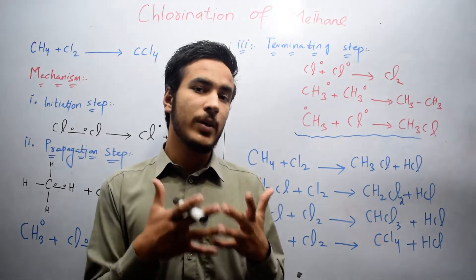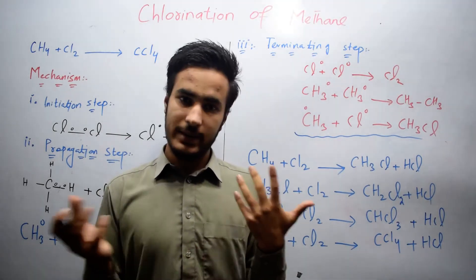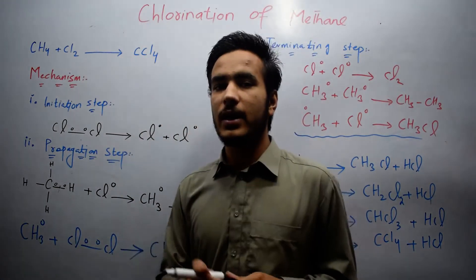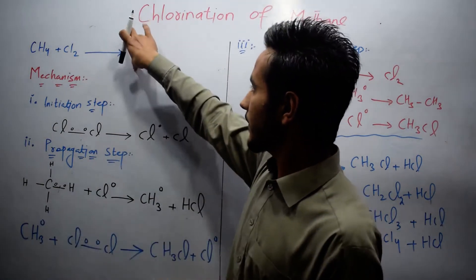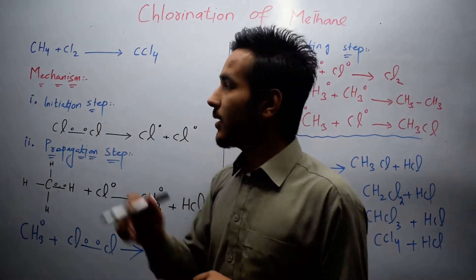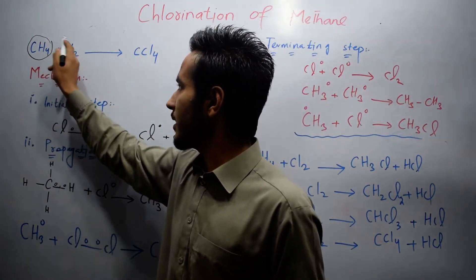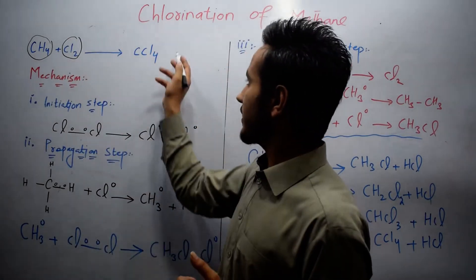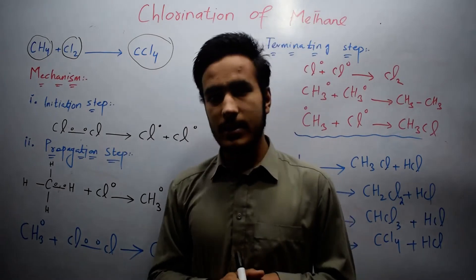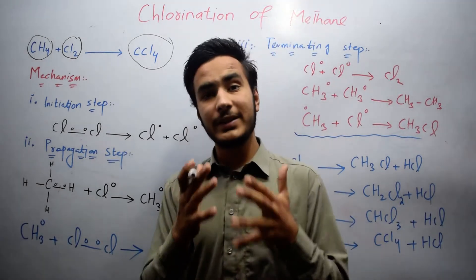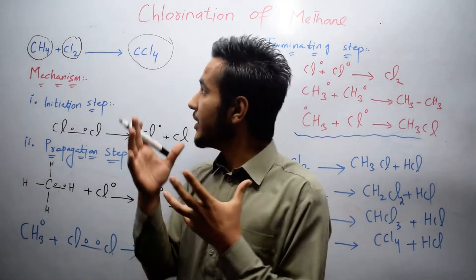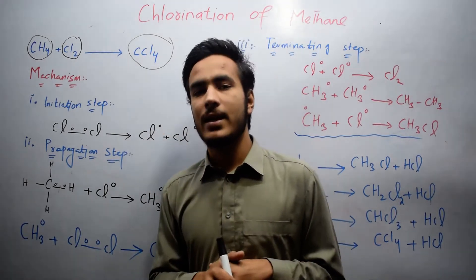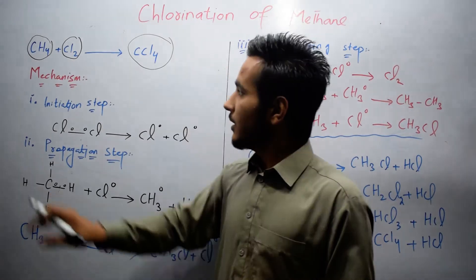Let's first look at the general product of chlorination of methane. We have methane CH4 gas, and we add Cl2. It gives us a product which is carbon tetrachloride CCl4. But there is a complete mechanism behind this product, so now we will discuss that mechanism.